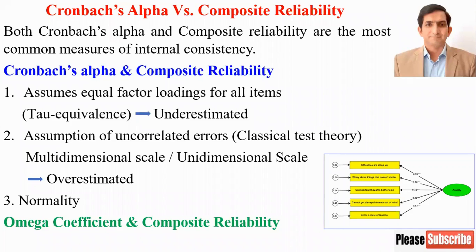The third point is that Cronbach alpha is also not appropriate when we have skewed or leptokurtic distributions.